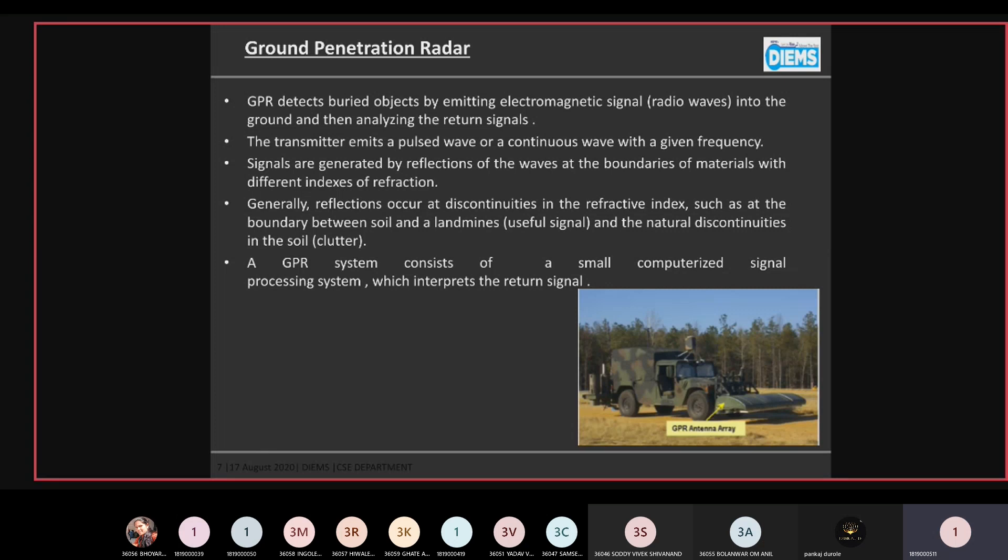Signals are generated by reflection of the waves at the boundaries of materials with different indexes of refraction. Generally, reflection occurs at discontinuities in the refractive index.